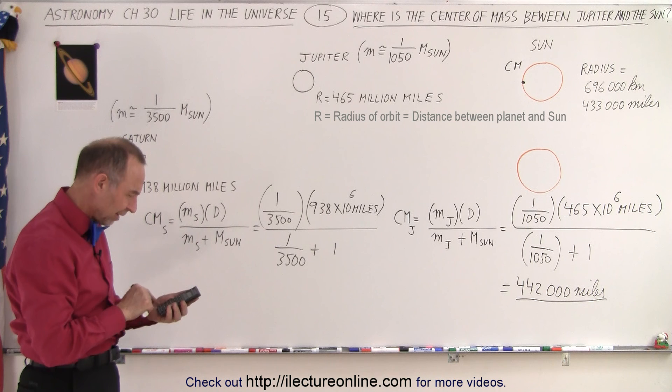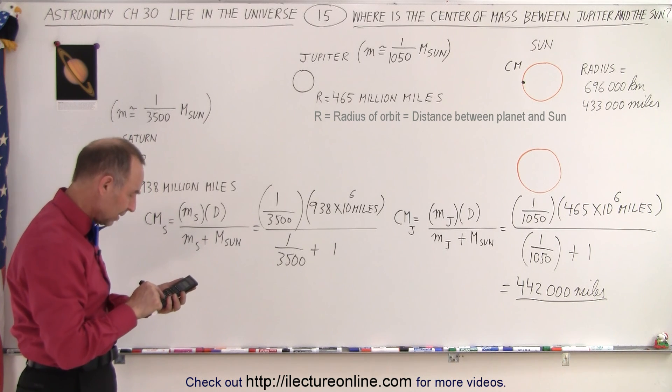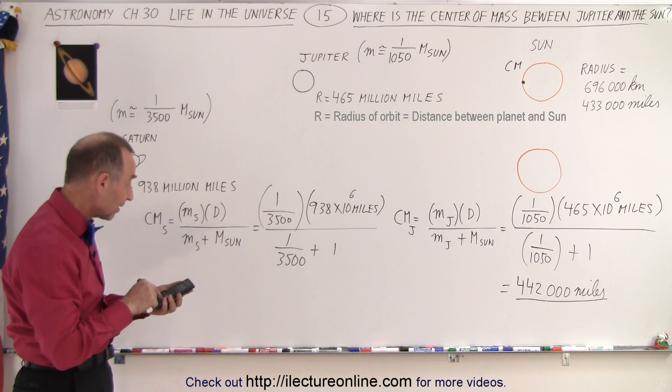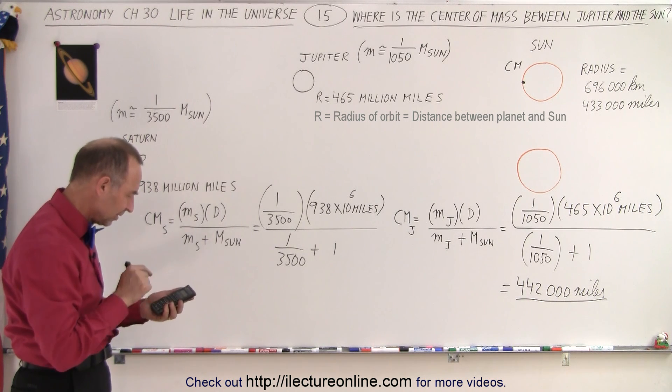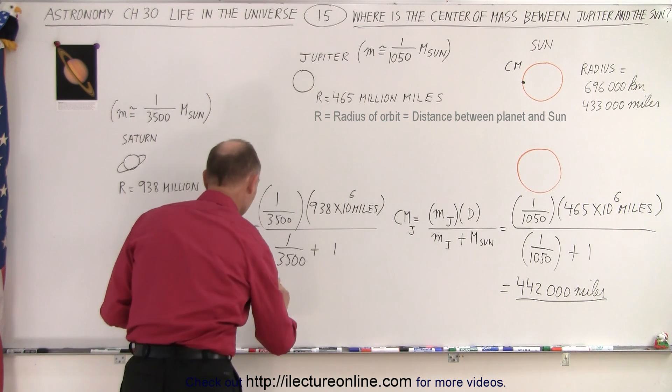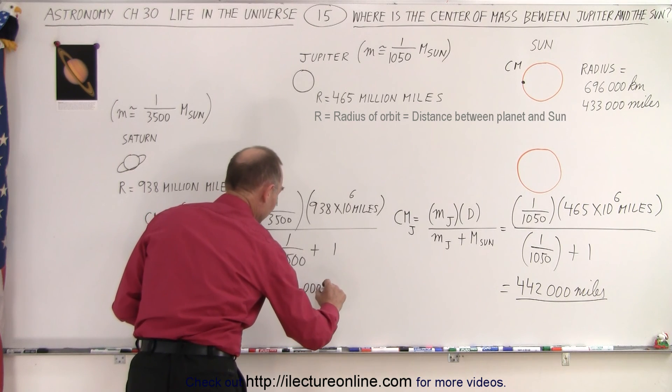So 1 divided by 3500, add that to 1, take that to the numerator, times 938 e to the sixth, and divide by 3500, and we get 268,000 miles. So 268,000 miles.